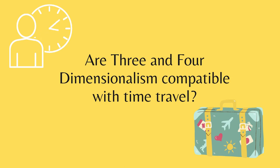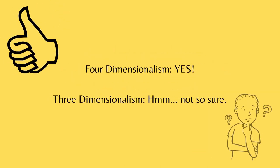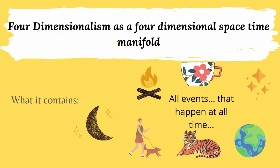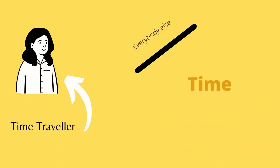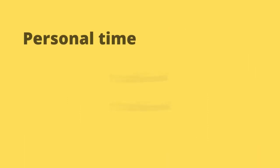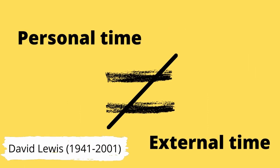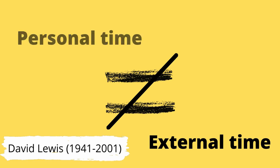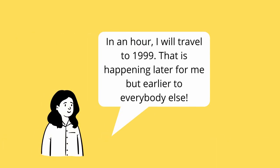At a quick glance, it would be easy to say that three-dimensionalism is not consistent with time travel, whereas four-dimensionalism is. Four-dimensionalism allows for time travel as it argues that the universe is a 4D space-time manifold. A time traveler can be seen like a streak through this manifold, but one that is slightly different than the others — she can be a zigzag, stretched out, or a broken streak. As Lewis argues, time travel is achievable by distinguishing personal time from external time. Personal time is what occupies a certain role in the pattern of events that make up the time traveler's life. When she time travels to the past, this is happening later in her personal time, but earlier in the external time.